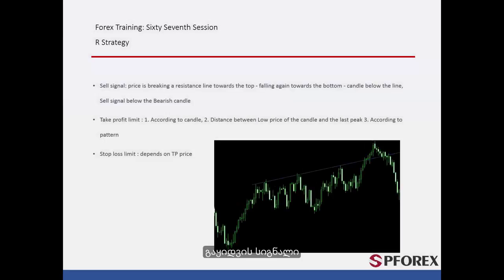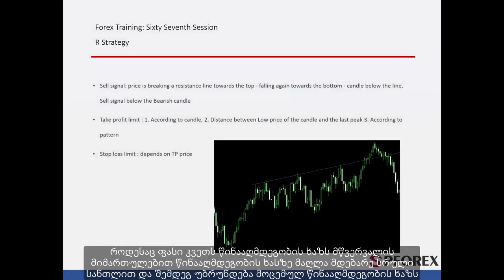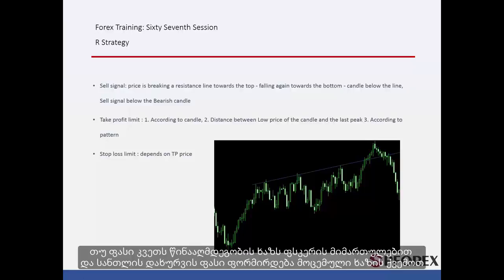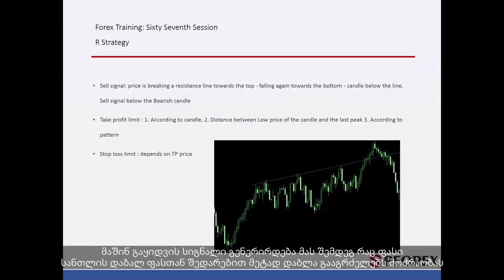Sell Signal: When a price crosses the resistance line towards the top with complete candles over the resistance line and then returns to that resistance line, if the price passes the resistance line towards the bottom and the close price of a candle forms under this line, then a sell signal is generated after price goes lower than the low price of that candle.